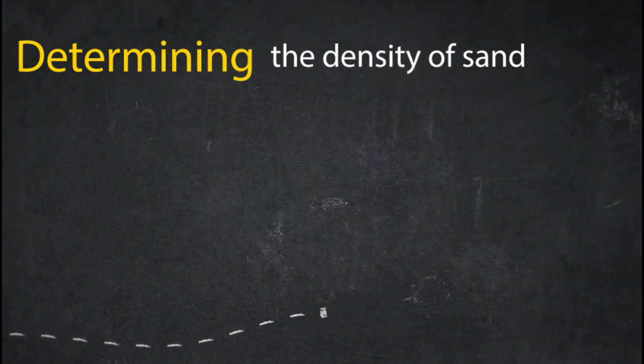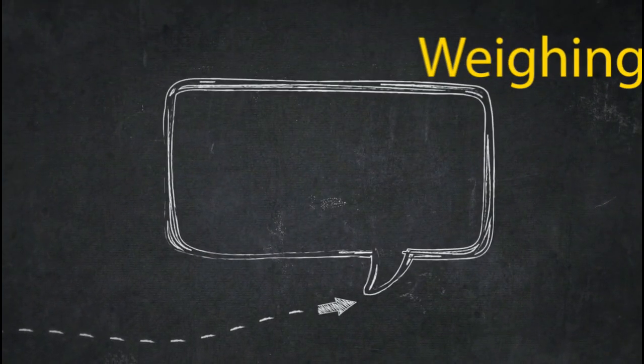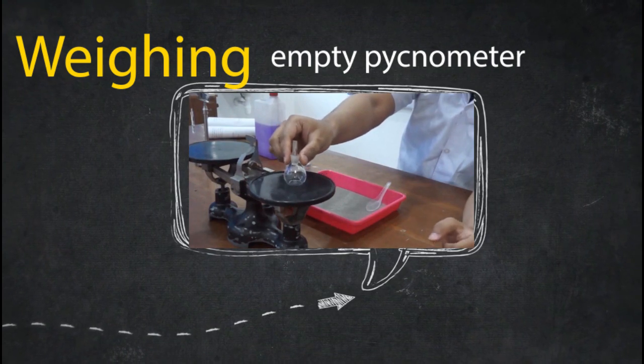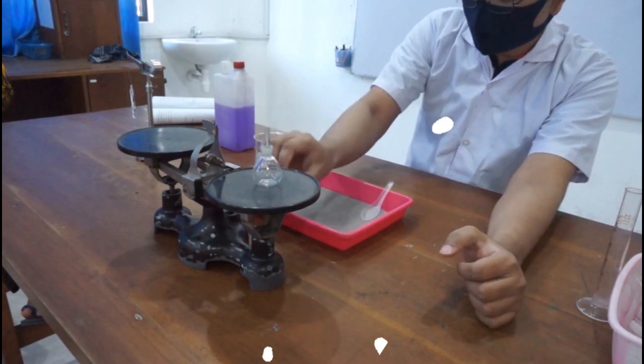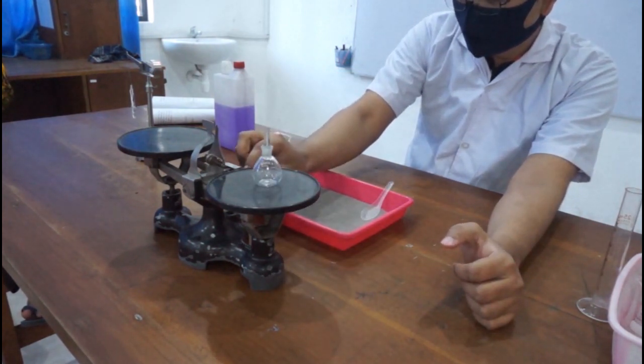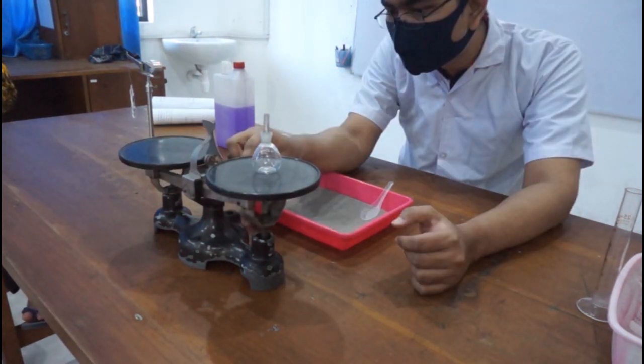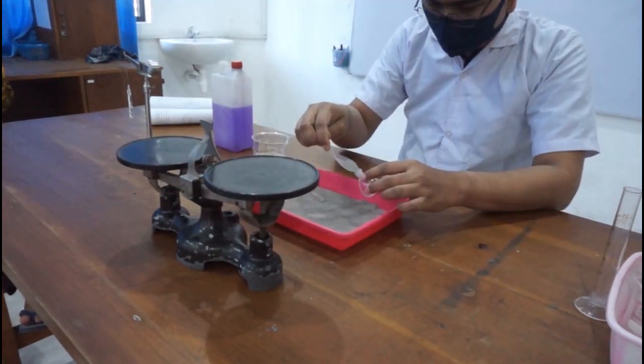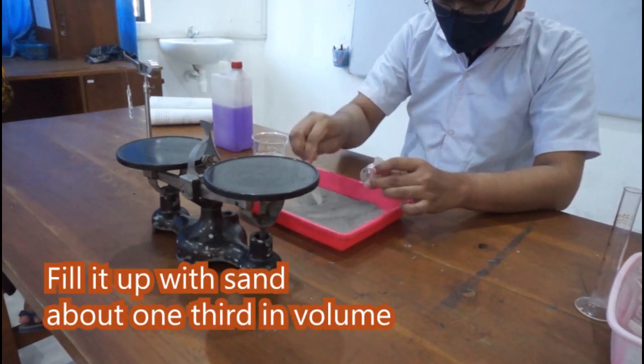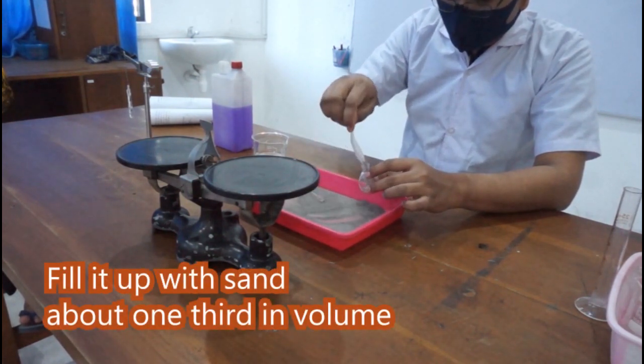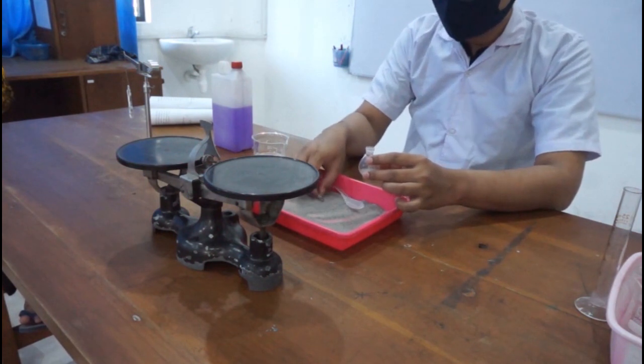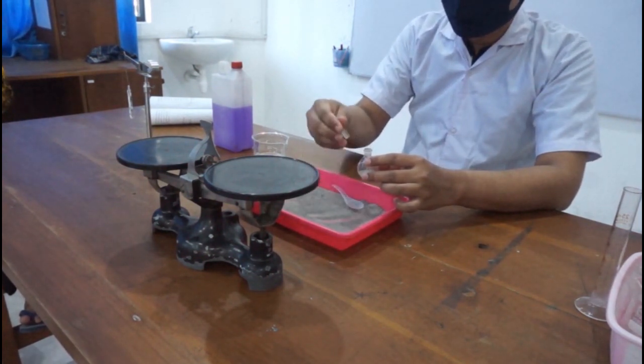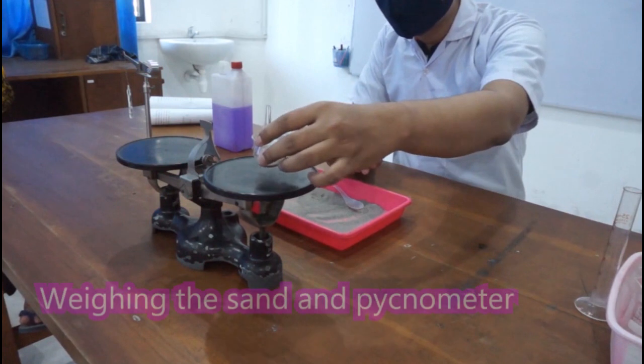The next one to determine the density of sand. First of all, we need to determine the weight of the pycnometer as a container. Put it in the scales, weigh it properly, then you will get the mass of the empty pycnometer. Now fill it up with sand, about one-third in volume, and then you weigh it on the scale.